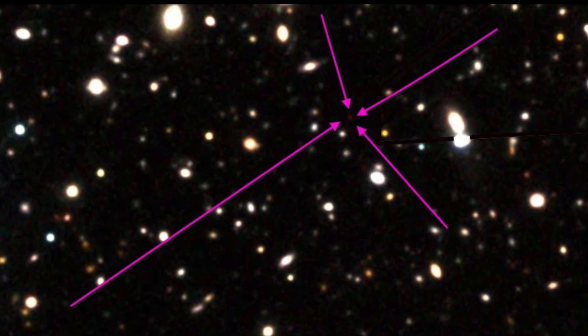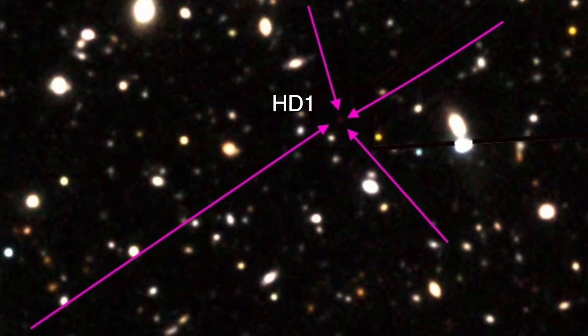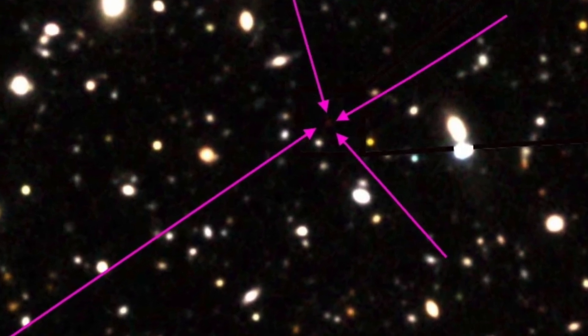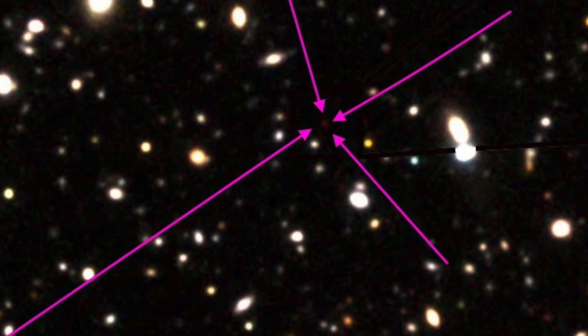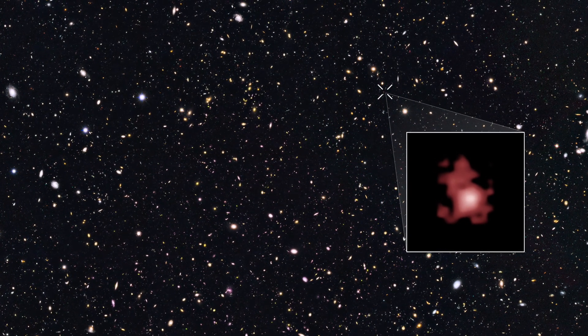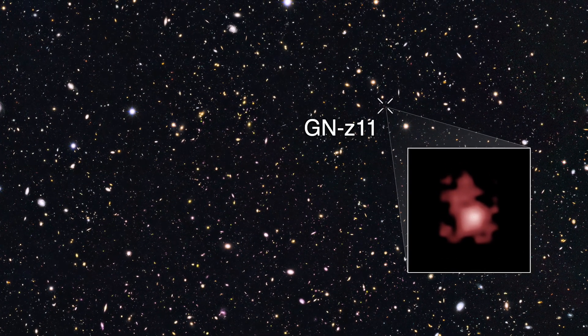Researchers have spotted what might be the farthest astronomical object ever found – a galaxy candidate named HD1, that they estimate is 13.5 billion light-years away. That's an astonishing 100 million light-years more distant than the current farthest galaxy GNZ11.